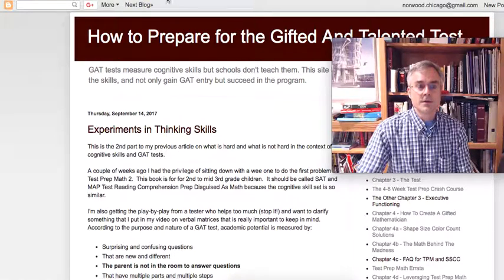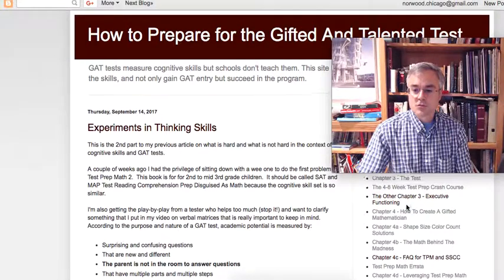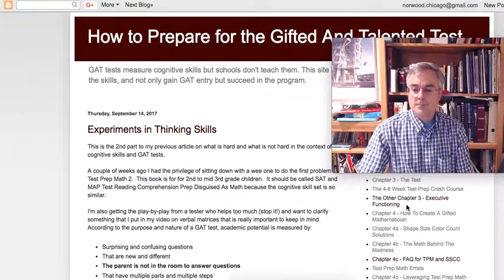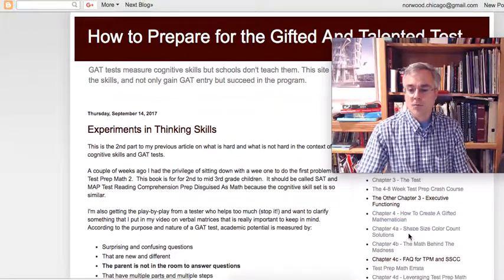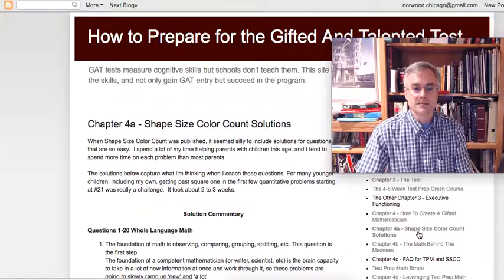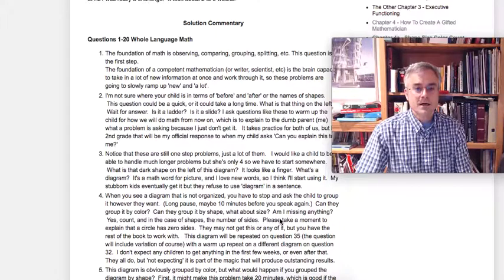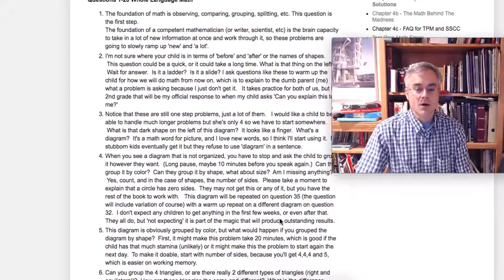So if you go to How to Prepare for the Gifted and Talented Test, which is www.getyourchildintogat.com, and you search through the permanent pages on the right, you will find chapter four, Shape Size Color Count solutions. And I'm editing these as I go.